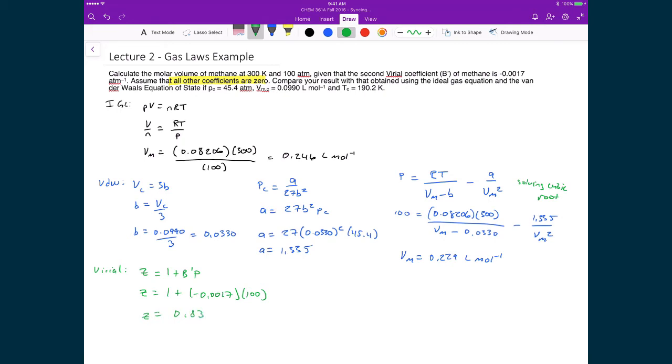Now this 0.83, what this tells us is that we have attractive forces at work, because again, the compressibility is less than 1. But at this point, we can just substitute in now into the modified ideal gas law, where we take compressibility into account. Z is equal to P times the molar volume divided by R times T. We're trying to solve for the molar volume. So what I'm going to do is I'm going to multiply both sides by RT. Then I'm going to divide both sides by pressure.